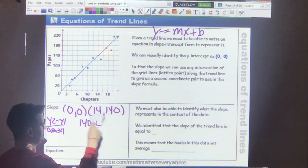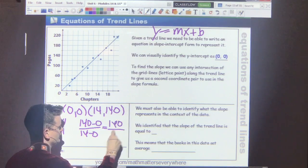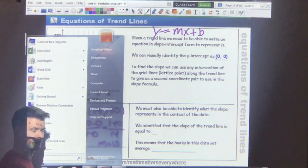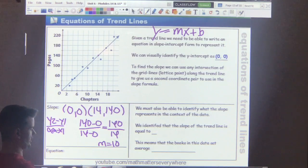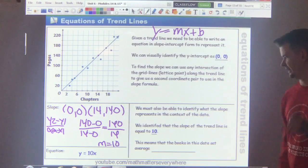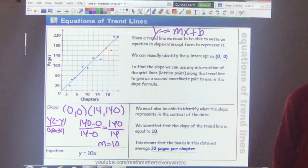That's going to give me 140 minus zero over 14 minus zero. I get 140 over 14. So, my slope is equal to 10. Once I know the slope, I can write an equation. Y equals 10x. No y-intercept because my y-intercept was zero. I know that the slope was 10. In the context of this problem, it means that there's 10 pages.